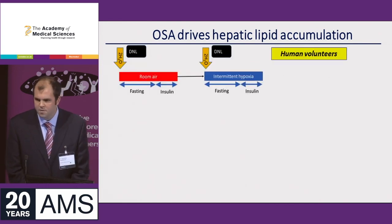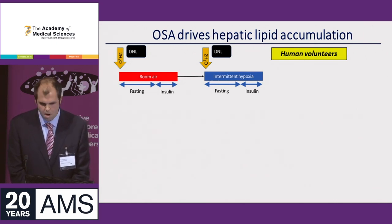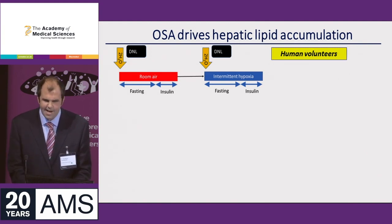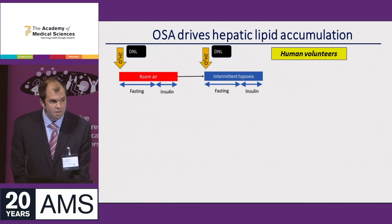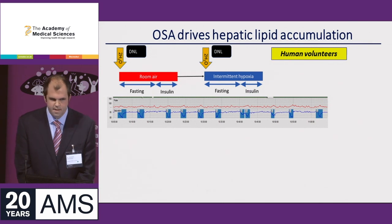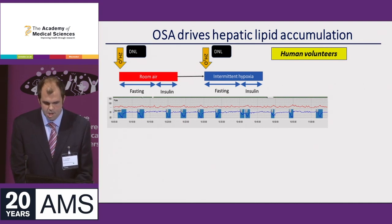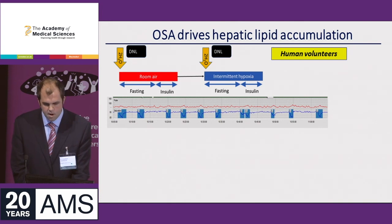In my human study, which has a very similar design to the rodent study but is a much more acute intermittent hypoxia protocol, we are healthy volunteers. The intermittent hypoxia was very well tolerated — we used a normal mask as you'd see on an NHS ward, and we were able to reliably and reproducibly desaturate patients' oxygen levels down multiple times across the hour to model OSA.